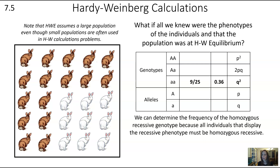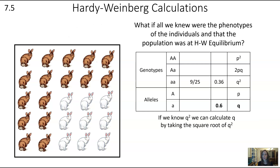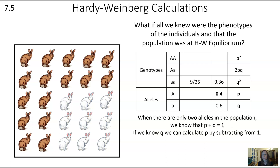Now that we know that q squared is 0.36, we can determine q. If q squared is 0.36, then q is 0.6, calculated by taking the square root. From there, if we know there are only two alleles in the population, and an allele isn't little a, it must be big A. So if the frequency of little a is 0.6, then the frequency of big A is 0.4. Algebraically, p plus q equals 1, so if we know q, we can calculate p by subtracting from 1.